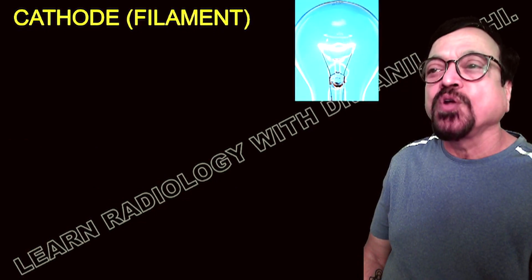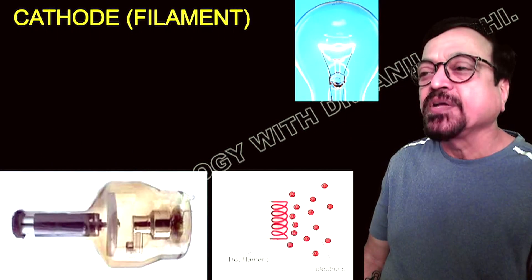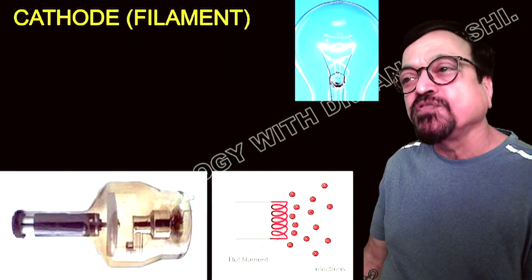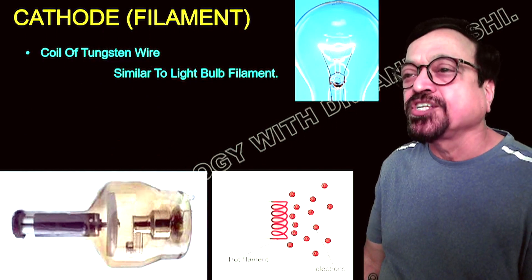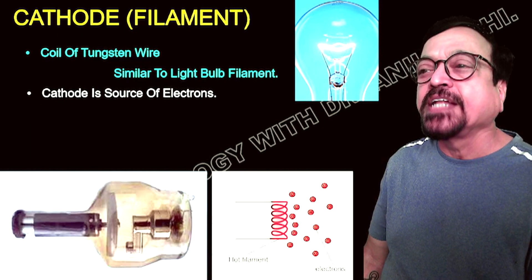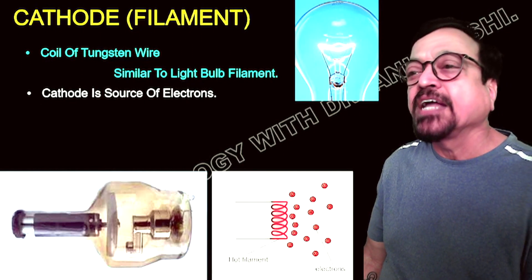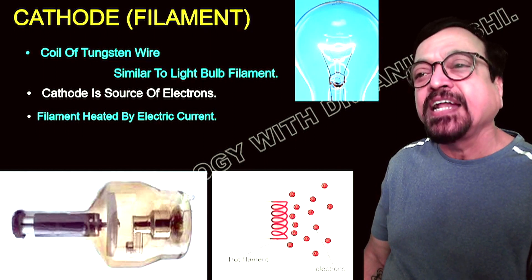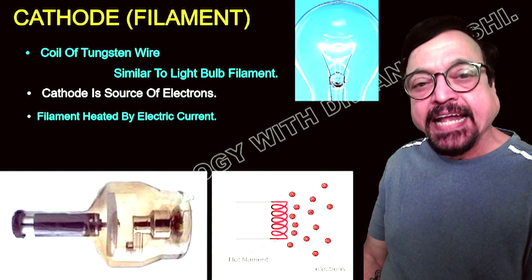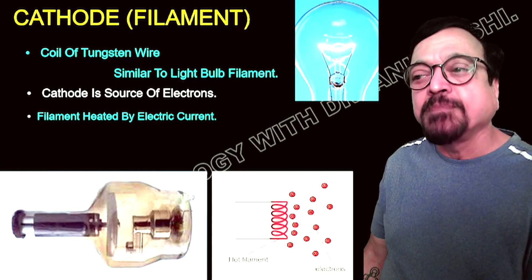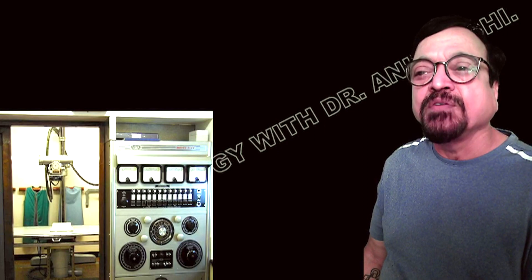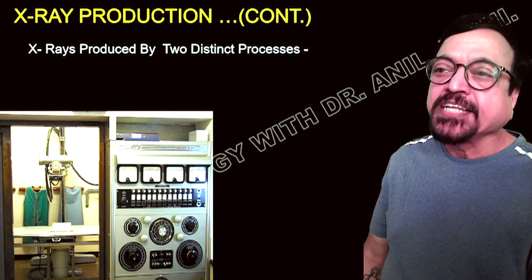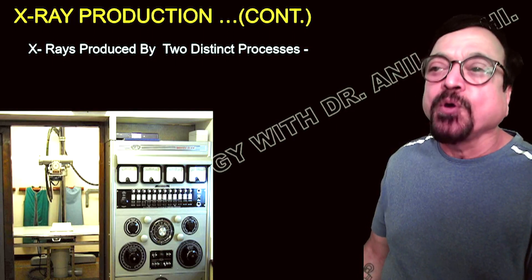The material usually used for the filament is tungsten, because of its high melting point — since a large amount of heat is involved, it should not melt. The cathode filament's main role is to supply electrons. When it is heated, it boils off electrons which are available for x-ray production. The cathode is a coil of tungsten wire, similar to an electrical bulb, and is the source of electrons by means of thermionic emission. The filament is heated by electric current; when it boils off, it releases electrons which are then converted into x-ray photons.